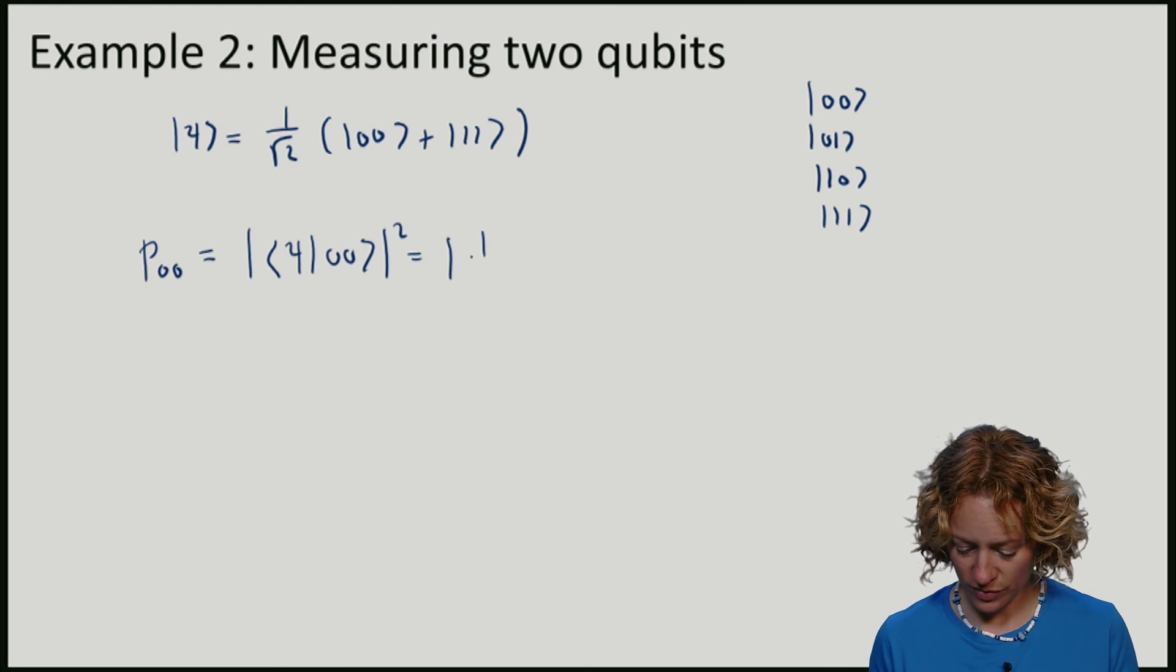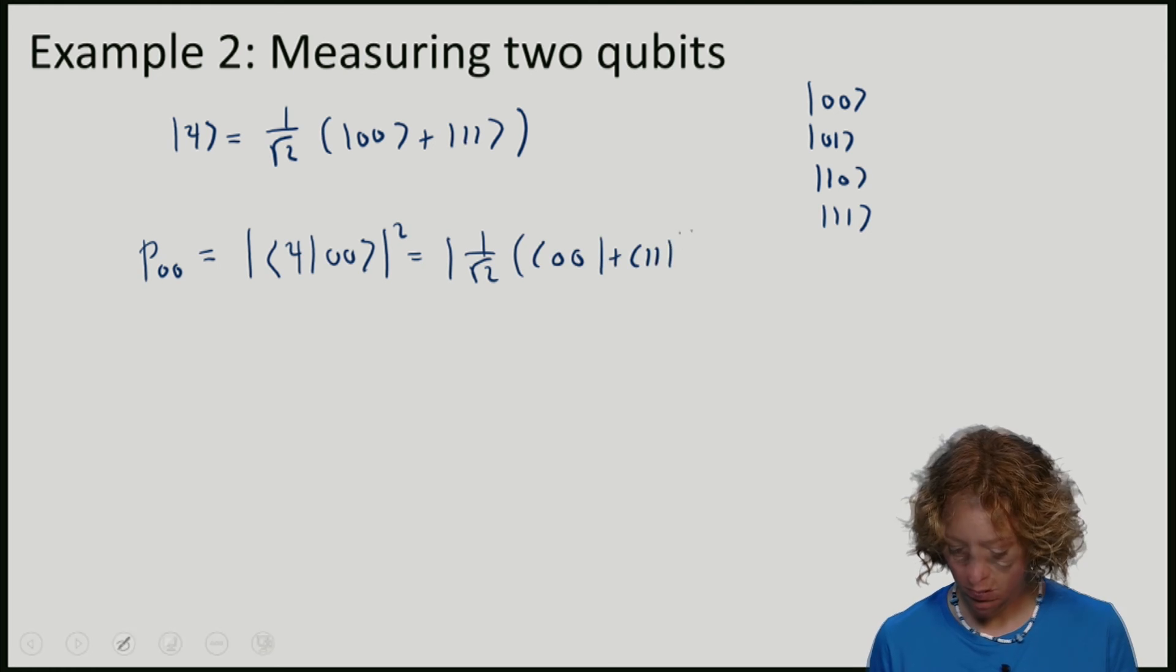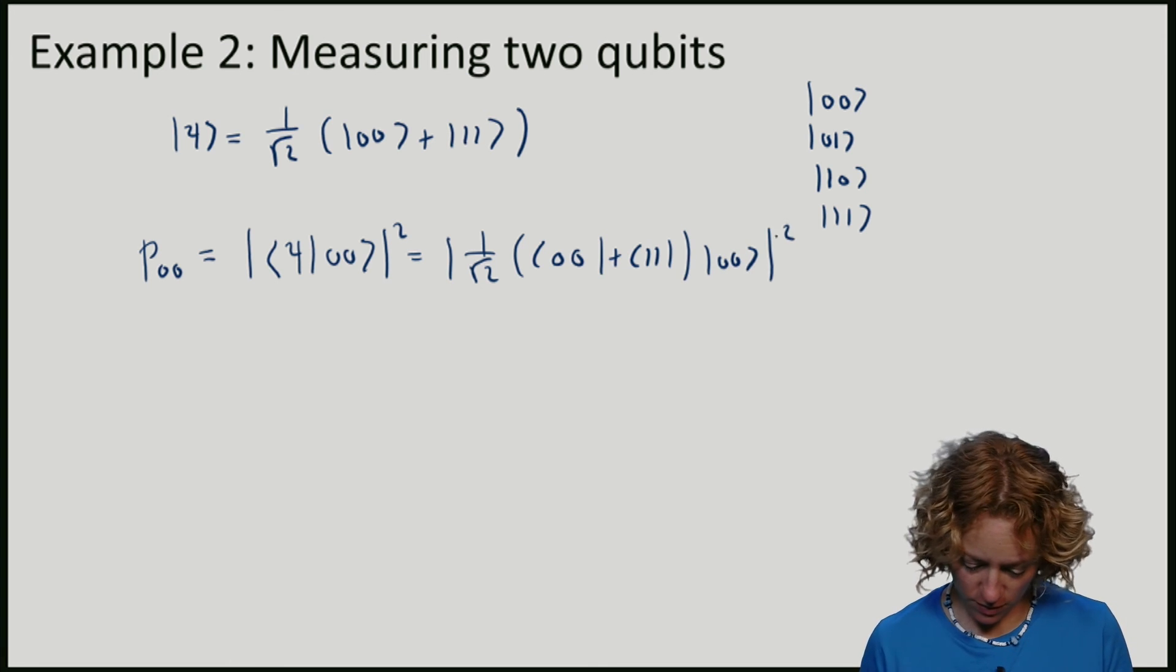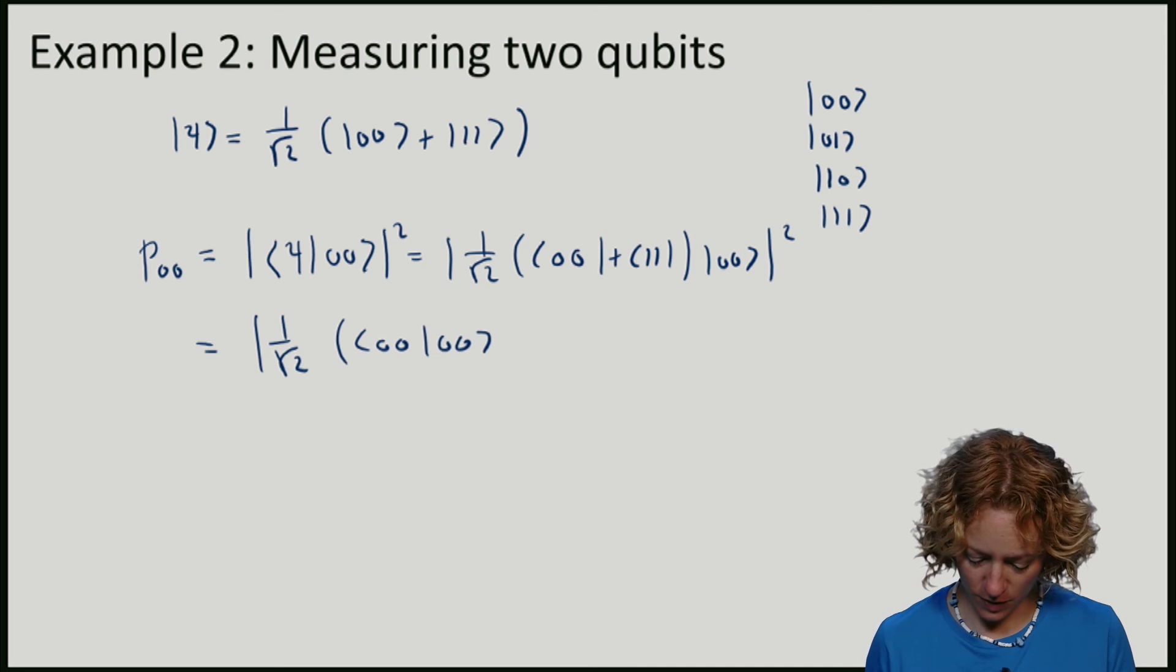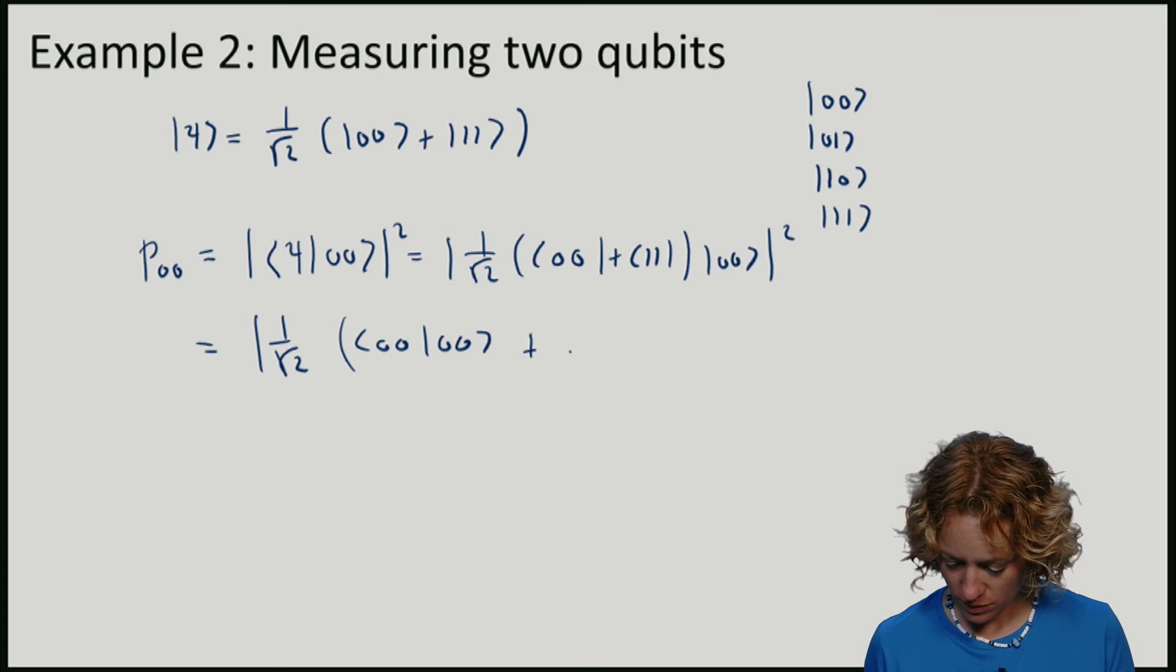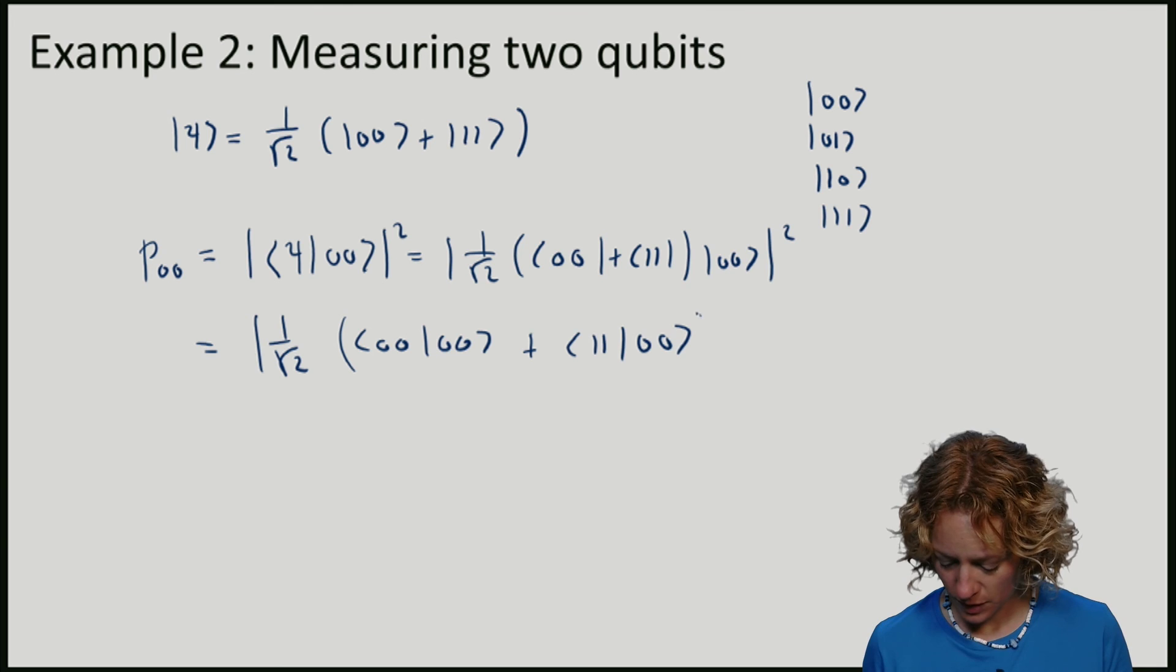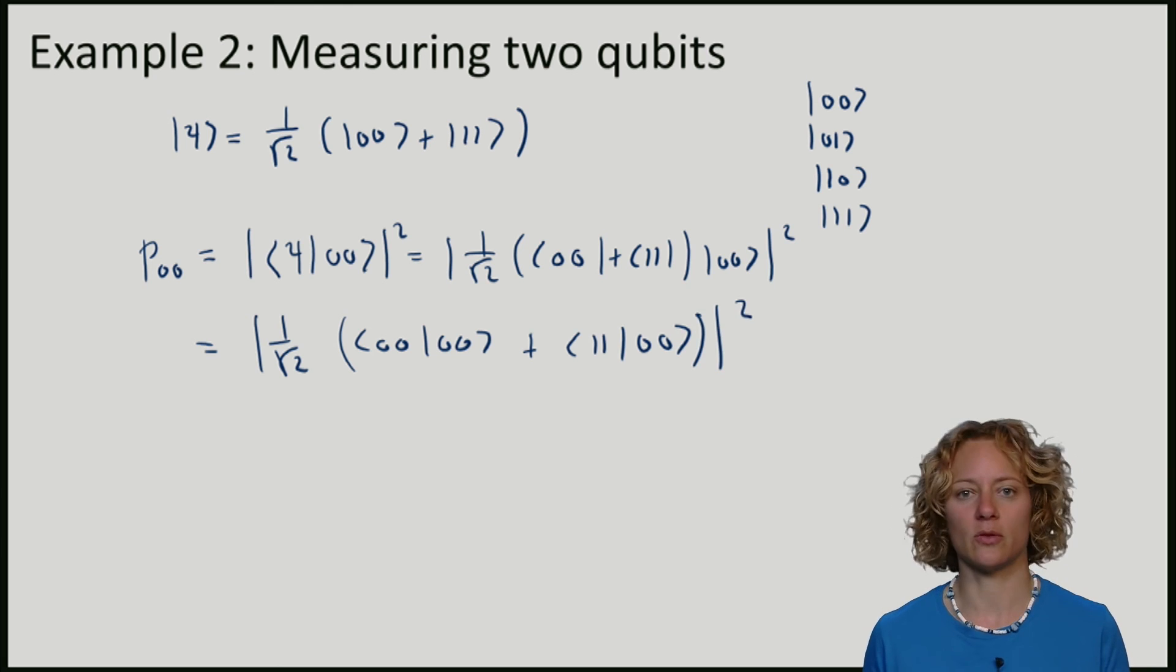So what we have is one over square root two times zero zero plus one one with zero zero, which gives us one over square root two times zero zero with zero zero plus one one with zero zero, and we square the whole thing.